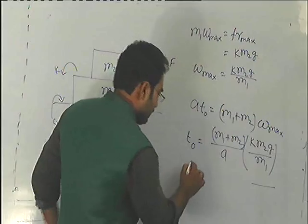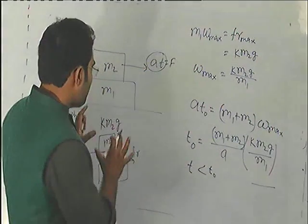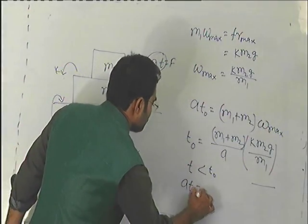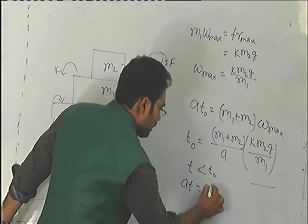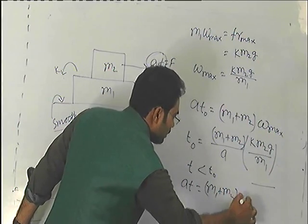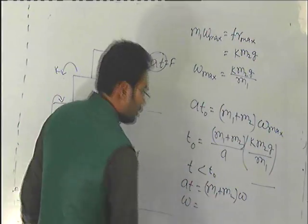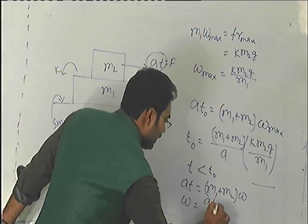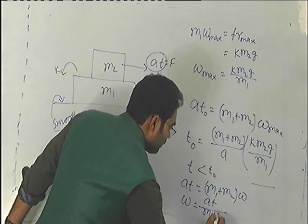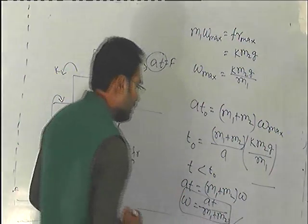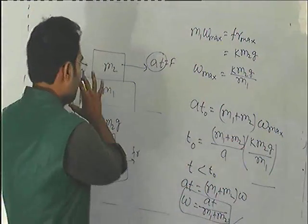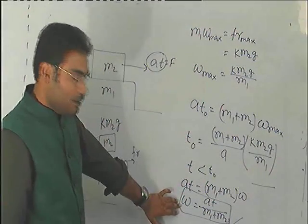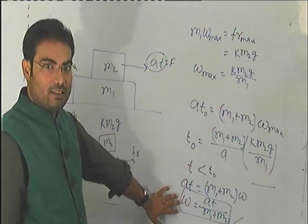If the time value is less than T0, the system will have at equals total mass times acceleration, which is m1 plus m2 times acceleration. This means acceleration equals at divided by m1 plus m2. Up to that time, both blocks m1 and m2 move together with this time dependent acceleration.